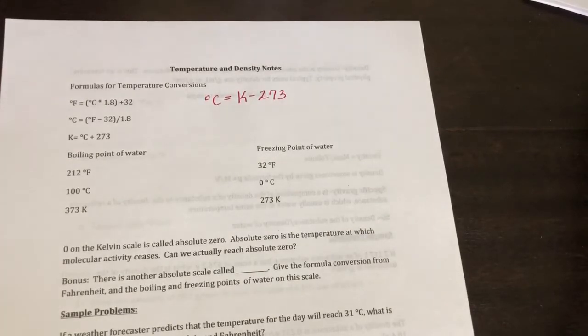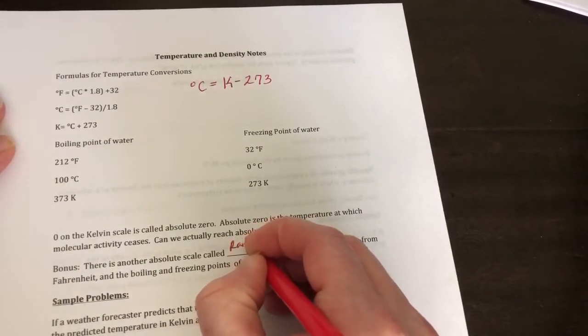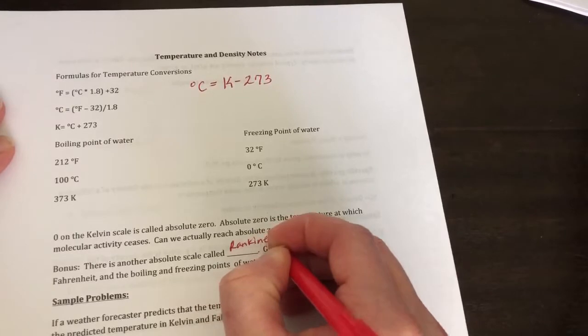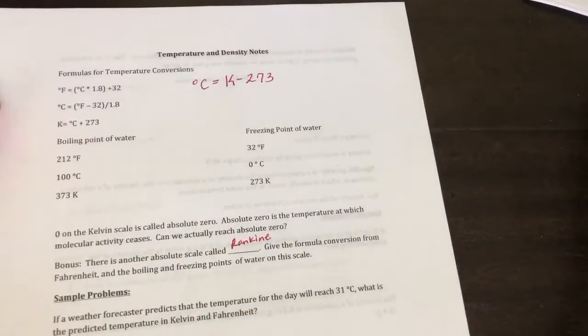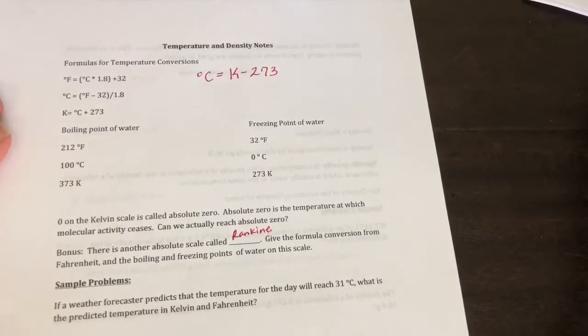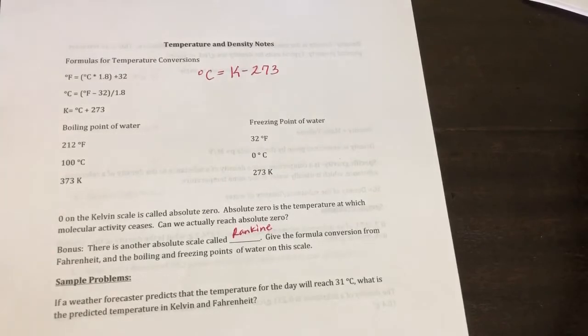Okay, there's another scale you might actually see in some of your classes called the Rankine scale. It's like the absolute scale for Fahrenheit. I believe it's 457 plus degrees Fahrenheit or 460. Anyways, we're not going to use this in this class. So just be aware of that.